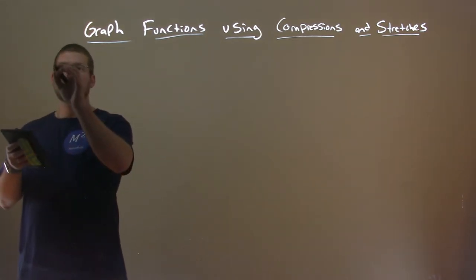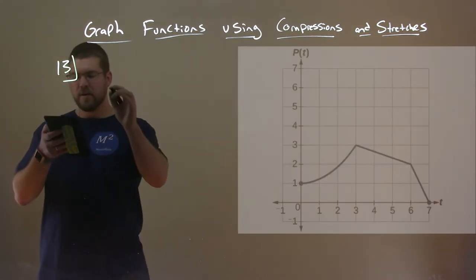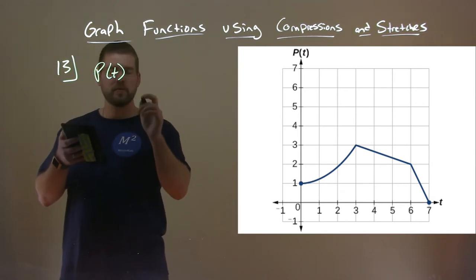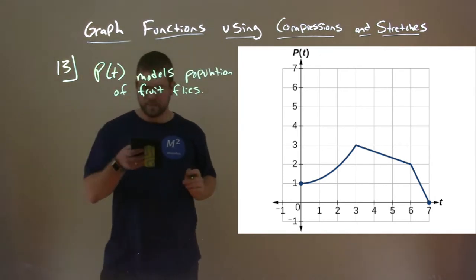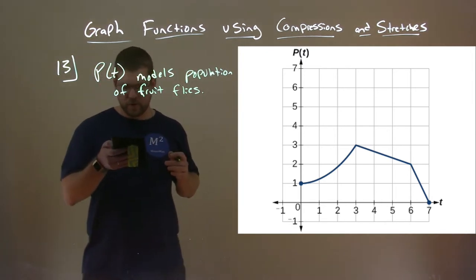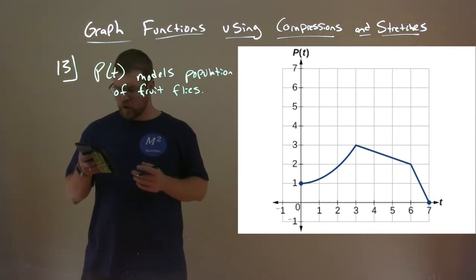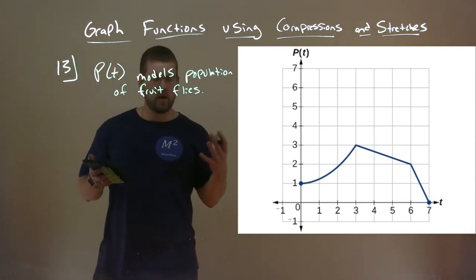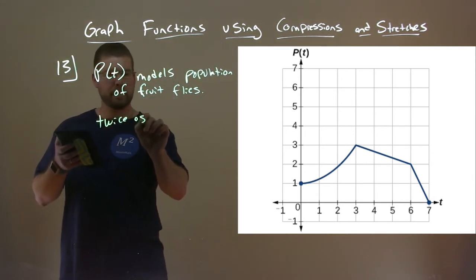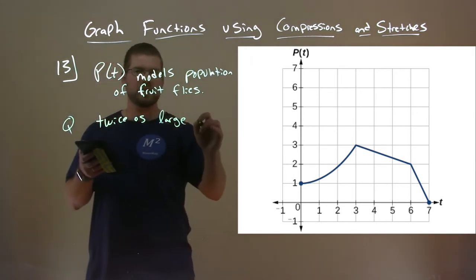Number 13. So this graph here is a function p of t, and it models the population of fruit flies. A scientist is comparing this population to another population Q, whose growth follows the same pattern but is twice as large. So Q is twice as large as p of t, same pattern.